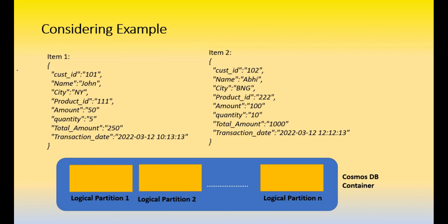Consider this example: Cosmos DB is a document DB that can store documents. Here we're looking at a JSON document - item 1, which is customer transaction data. It has attributes: customer ID, name, city, product ID, amount, quantity, total amount, and transaction date. Among all these attributes, the question is which one should we consider for partitioning, and what happens when we choose each attribute. We'll analyze these to understand how to choose consciously.